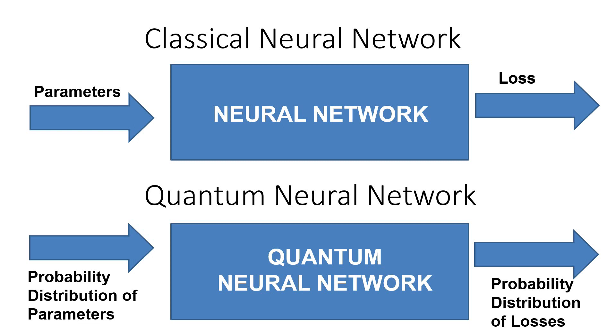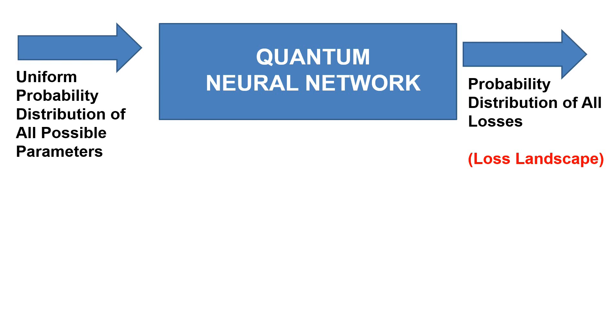In our method, we input a uniform probability distribution of all possible parameters. The quantum neural network then outputs a probability distribution of all possible losses. This is the loss landscape.